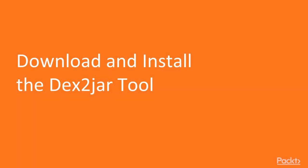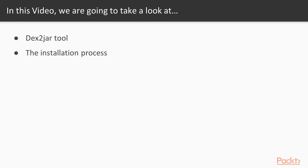In this video we are going to learn about the dext2jar tool and how we can use this dext2jar tool inside a Windows machine to convert an APK file into a JAR file. First of all, we need to download the dext2jar tool inside the Windows machine.